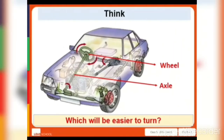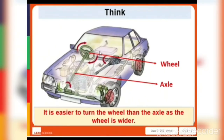Now you can see the wheel and the axle. Which will be easier to turn? It is easier to turn the wheel than the axle because the wheel is wider. The wheel is wide and the axle is narrow, so it is not easy to turn the axle directly.